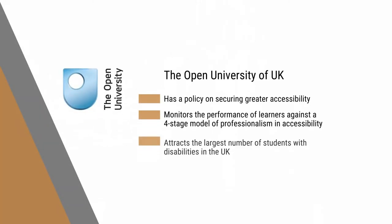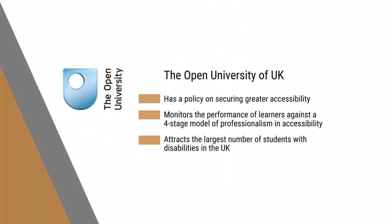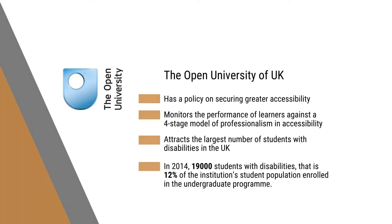For example, the Open University of UK has a policy of securing greater accessibility, which ensures that all students, regardless of their access needs, achieve comparable learning objectives. The university also closely monitors the performance of learners against a four-stage model of professionalism in accessibility. It attracts a large number of learners with disabilities — in 2014 alone, 19,000 learners with disabilities, that is 12% of total enrollment, were enrolled in the undergraduate program.